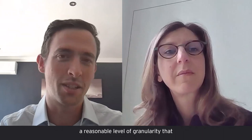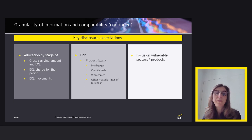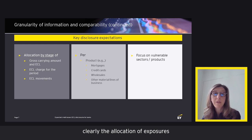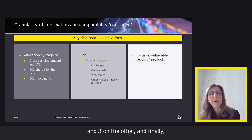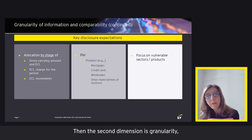There are two angles: first the data, then granularity by product and by market. The key areas of disclosures are clearly the allocation of exposures and related ECL allowance by stage, then the ECL charge for the period split by stage — at least stage 1 and 2 on one hand and stage 3 on the other — and finally movements, that is the reconciliation of opening and ending balances by stage for both exposures and related ECL.